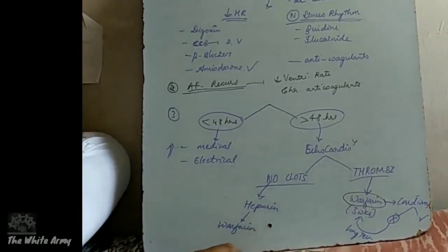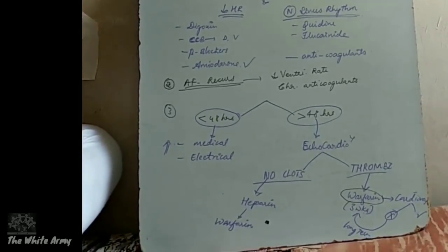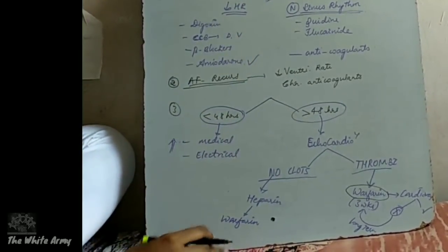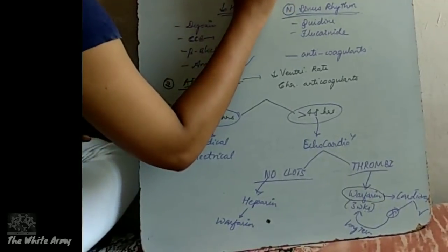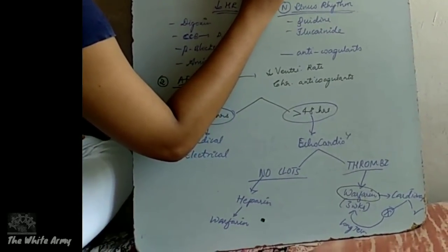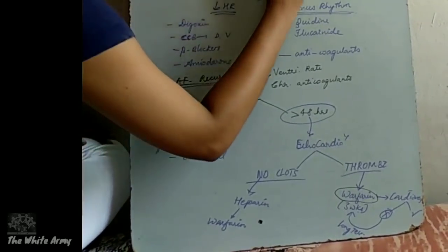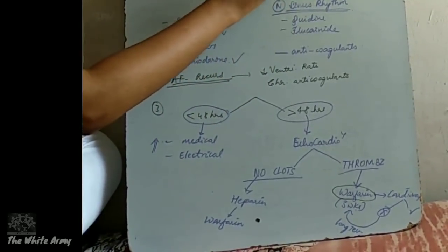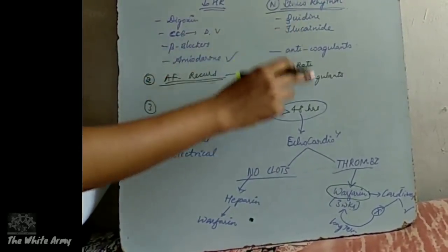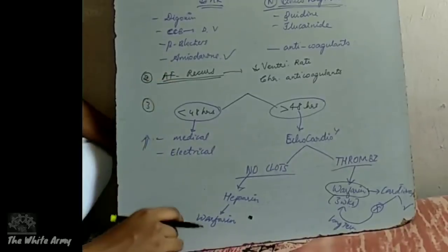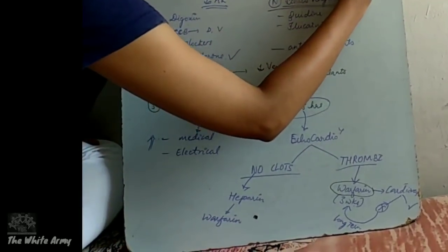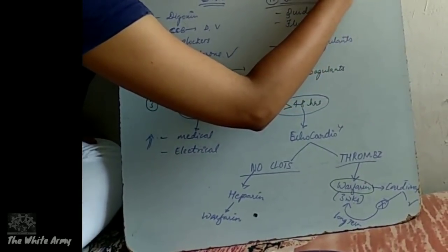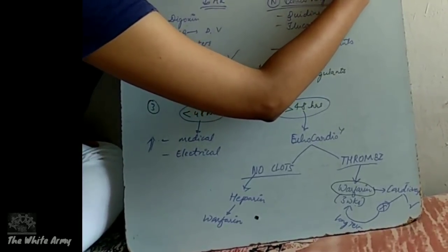These anti-thrombotics are given mainly to prevent further complications like thromboembolism. Where warfarin is contraindicated, the alternative is aspirin 325 mg per day. Aspirin is indicated only where warfarin is contraindicated or when the patient is less than 75 years of age with no risk factors.